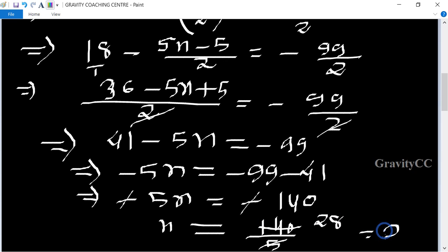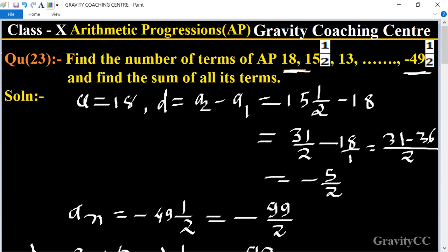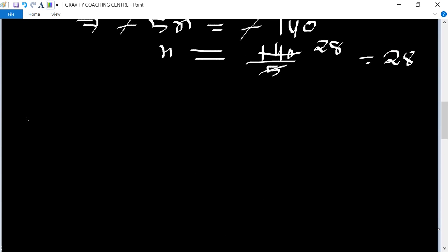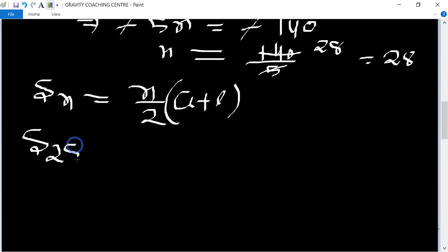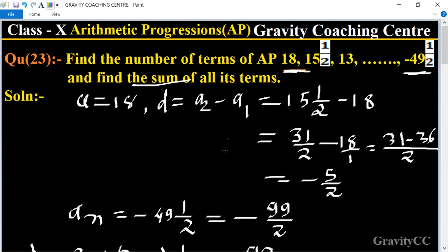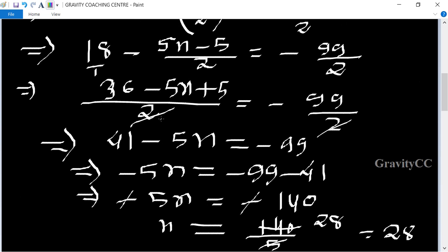So find their sum. The formula of S_n equals, this formula is n/2 bracket of (a plus last term). The value of n is 28, so 28 upon 2, times (18 plus last term is minus 99/2).